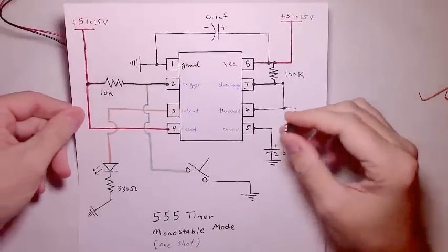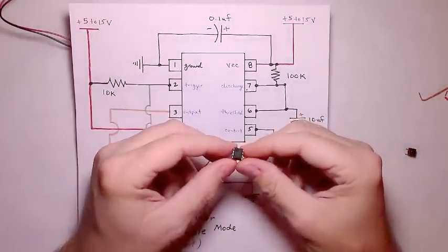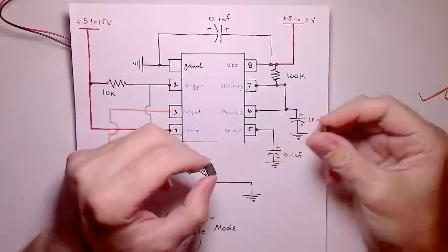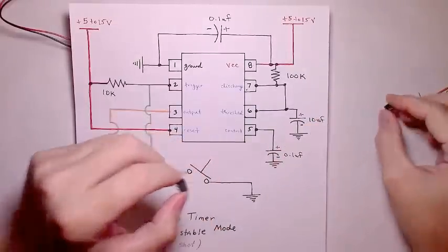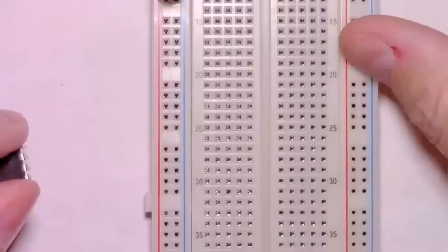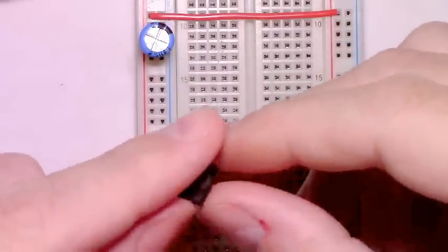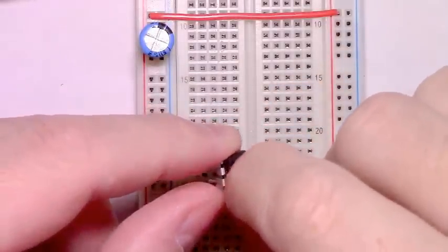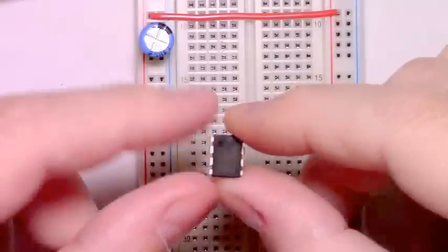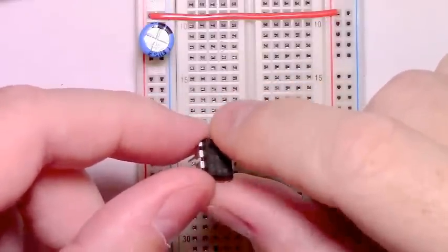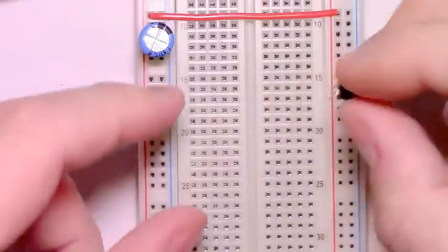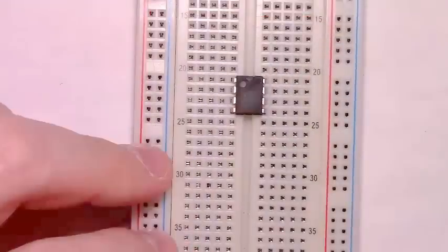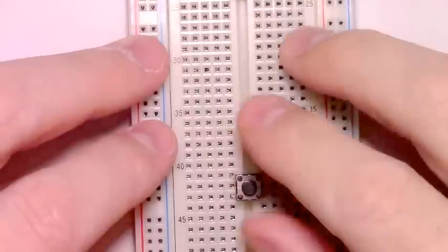Referring to our schematic, the next thing we need to do is add our 555 timer to the breadboard as well as our momentary button. We want to make sure to orient the timer in the right direction. There's often times a little divot to indicate pin 1 as well as the scallop at the top. We just insert it into the board, then the momentary button. Just push it in.